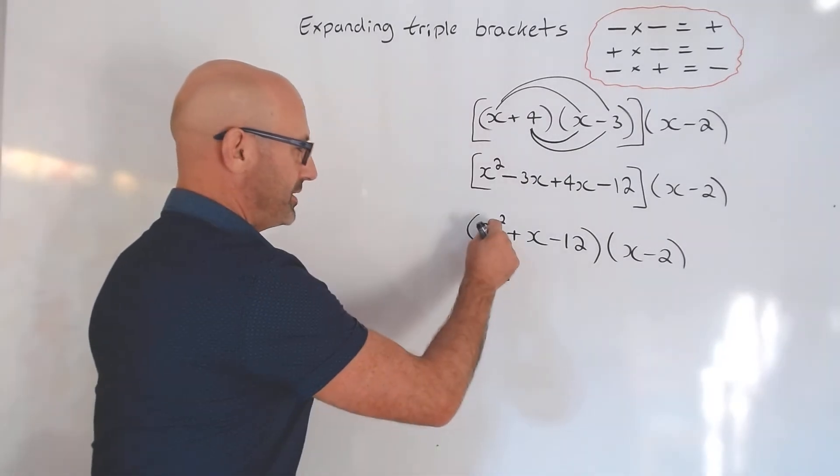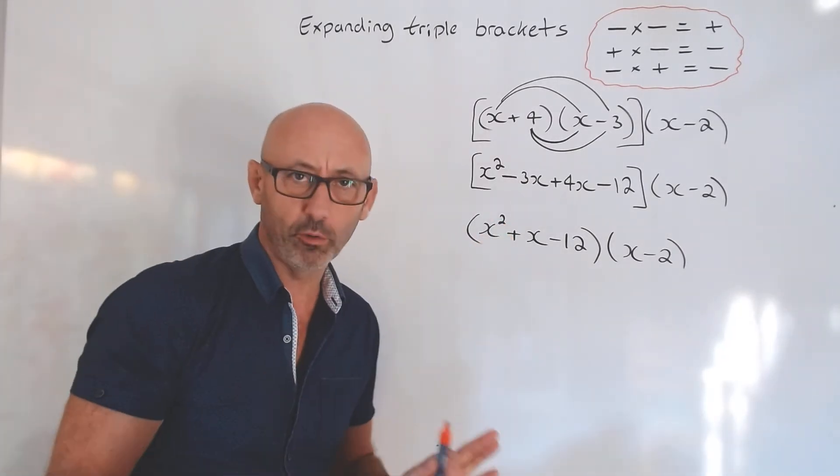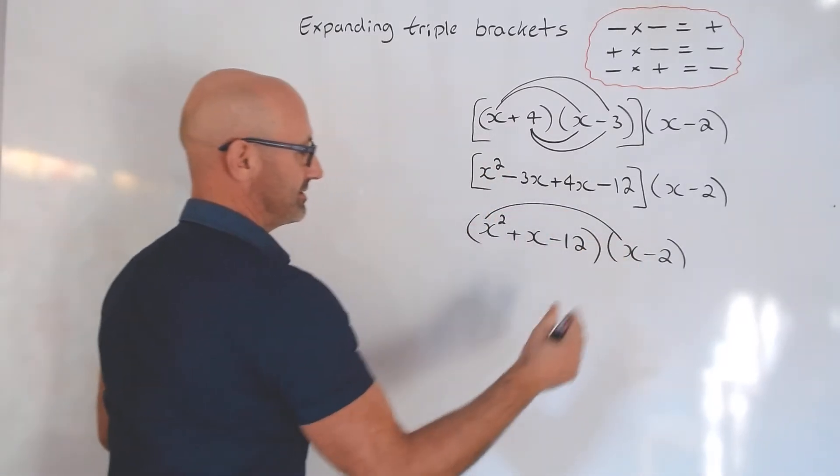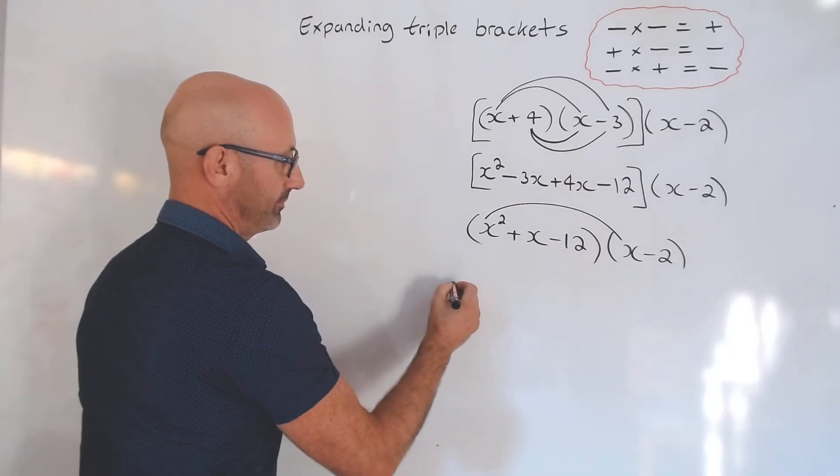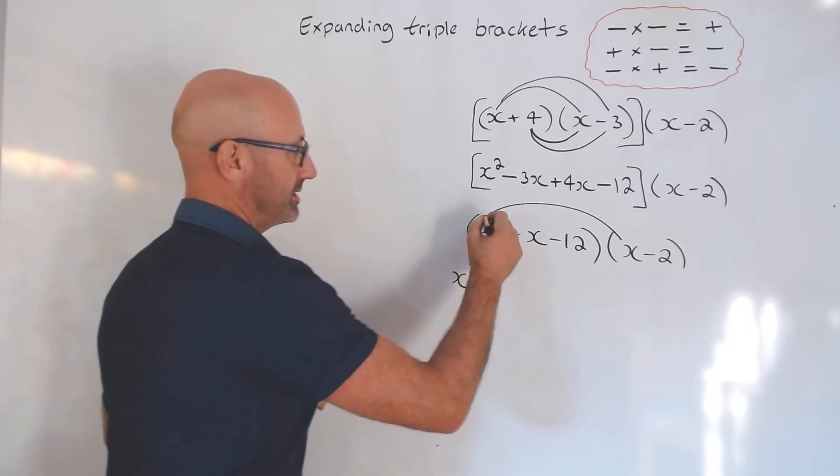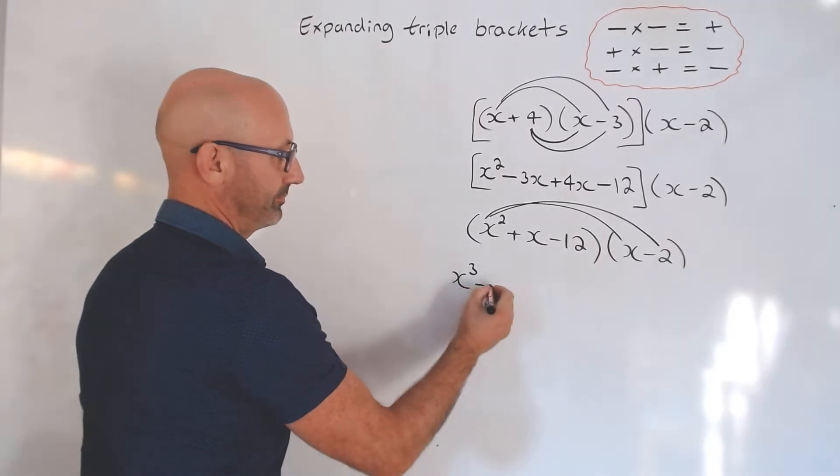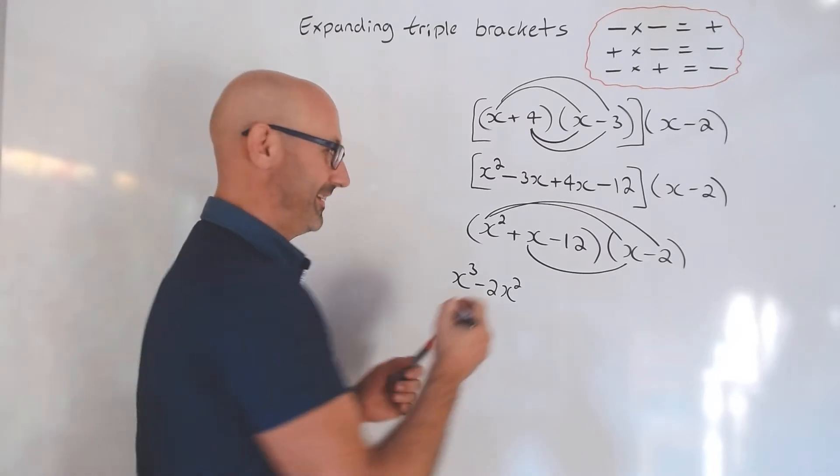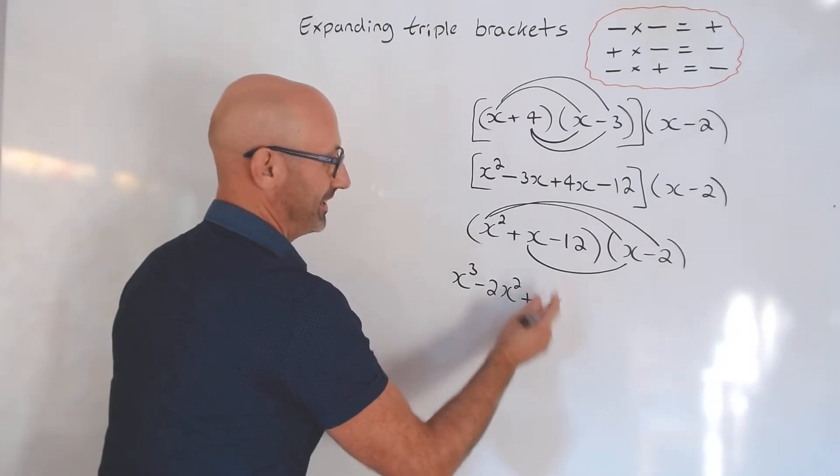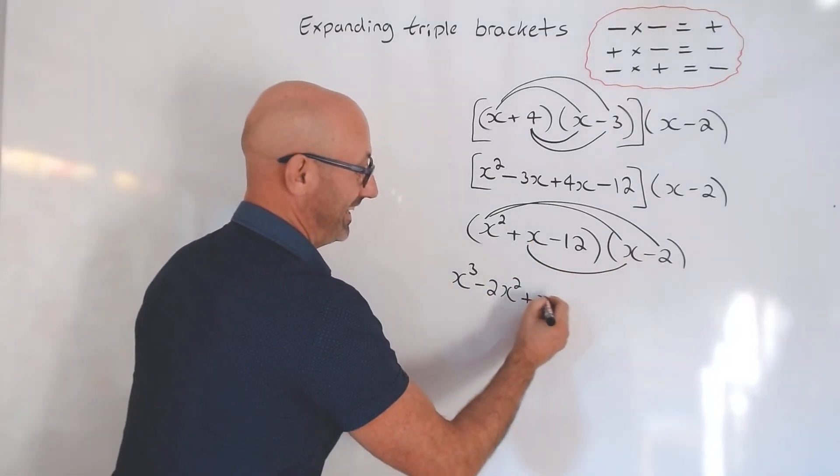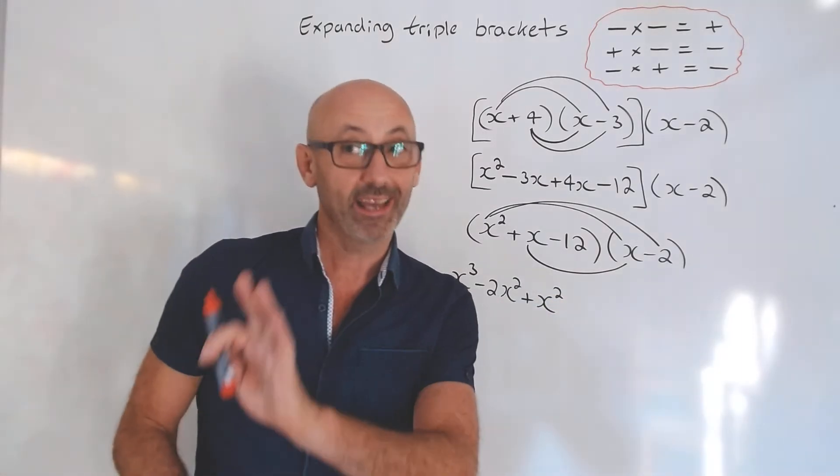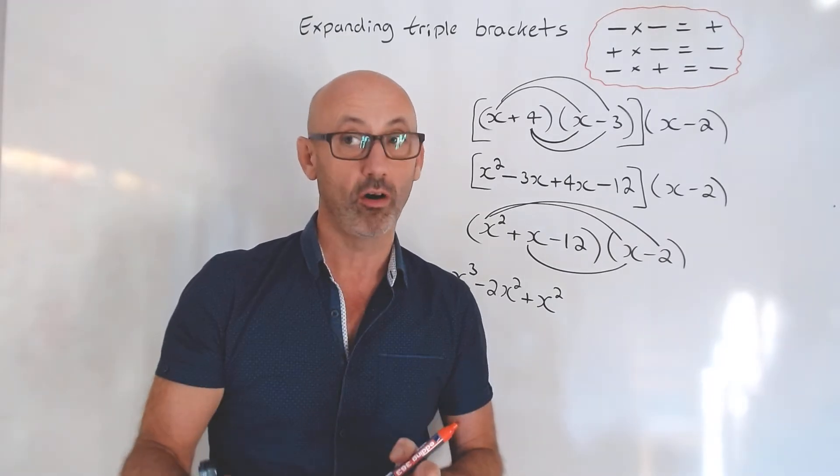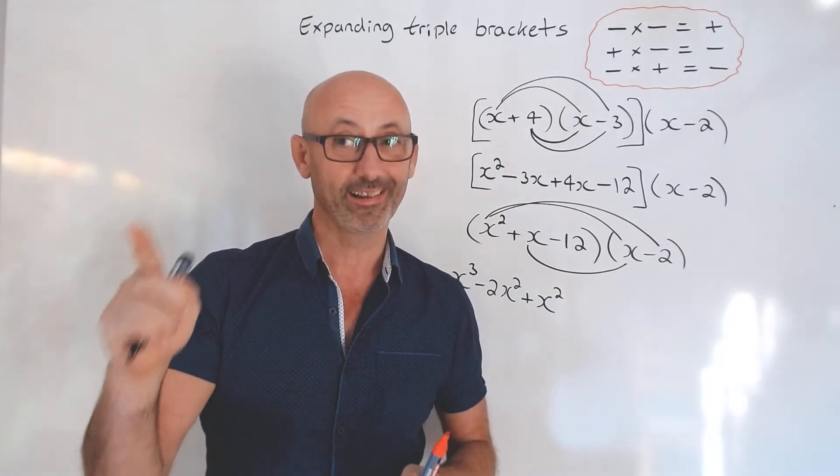Doing this one now, this is the bit you may not be familiar with. Nina, you do this bit for me. What's that times that? x cubed. And that times that? Minus 2x squared. Plus 2, x times x is definitely x squared. I'm glad you did that because so many people go x times x is 2x, and it's not. x times x is definitely x squared.